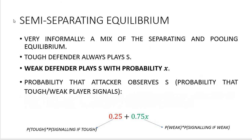Alternatively, we can assume the attacker is able to update beliefs and try to define a semi-separating equilibrium. Speaking informally, semi-separating equilibrium is a mix of separating and pooling equilibrium. Assume that tough defender always chooses to signal. We need to figure out the condition for weak defender to signal or not. Let's say weak defender will signal with probability x.